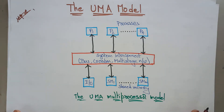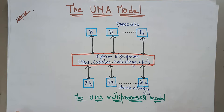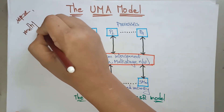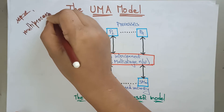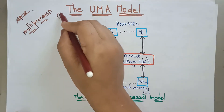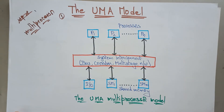Coming to the first architecture of multiprocessor — the different types of multiprocessor architectures are UMA, NUMA, and COMA. So the three types of multiprocessor architectures are UMA, NUMA, and COMA.